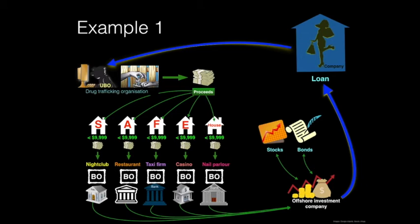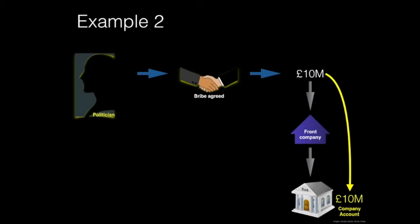These beneficial owners require bank account openings, so their accounts will be monitored — and it is up to you to monitor and red-flag anything inappropriate. In a separate example: a corrupt politician wants to establish a corporate vehicle to park a bribe. He sets up a front company to disguise and control his beneficial ownership, not wanting his politician status flagged to the bank, as it would place his financial transactions under higher scrutiny. The front company's bank account receives a $10 million bribe by wire transfer.